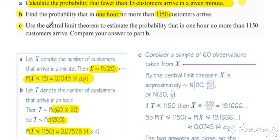So it's part C where we use our central limit theorem idea. Use the central limit theorem to estimate the probability that in one hour, no more than 1,150 customers arrive. So this is just an alternative way of doing what we did in part B.